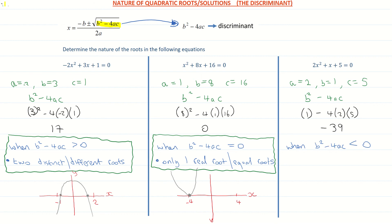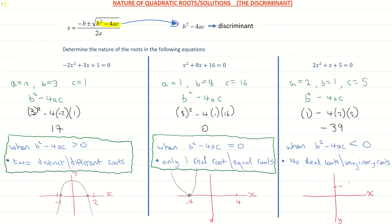This is our third scenario — when the value is less than 0. This tells us we actually have no real roots; what we have are imaginary roots. We look at imaginary roots in more detail when we get to complex numbers, but for now we just need to know they have no real roots — the parabola doesn't cross the x-axis. On the coordinate graph, 2x squared plus x plus 5 comes down and cuts the y-axis but doesn't cross the x-axis at all.